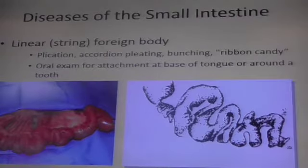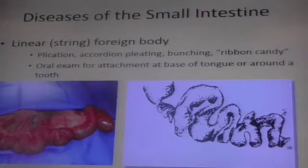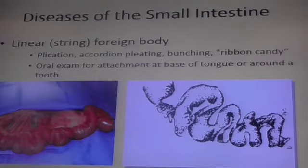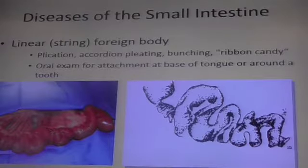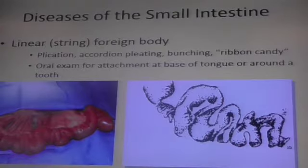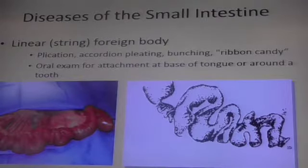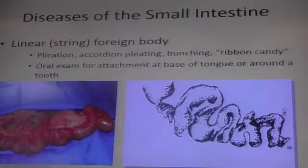So if a pet swallows a string and it's not attached, it's just going to move on through the small intestine. If you see signs of plication — pleated, bunching appearance — always go back and evaluate the oral cavity, because a lot of times the string is attached to the base of the tongue or around a tooth. If you see it, just cut it. You don't need to pull it — just cut it. Then it's going to release and continue into the esophagus and then into the small intestine.